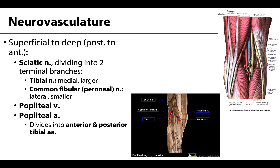Oftentimes in dissection one will say they can only find one vascular structure, and that is typically because the popliteal vein and artery are often wrapped very tightly together in fascia. Rest assured, if you further dissect you can separate the structures — the popliteal vein will be a little more superficial with the popliteal artery deepest.